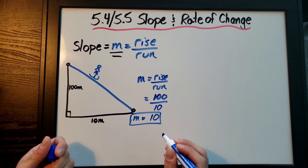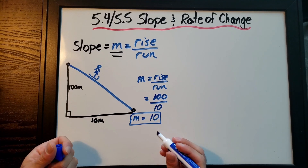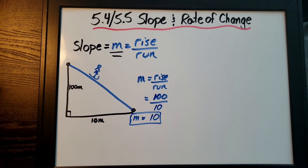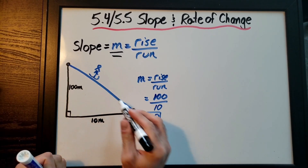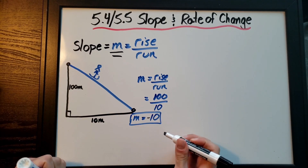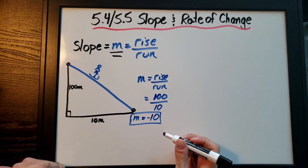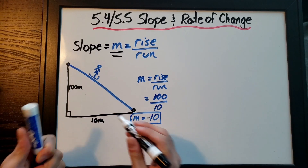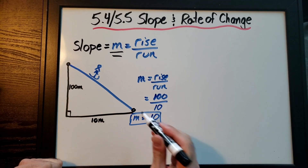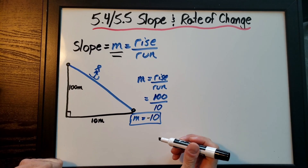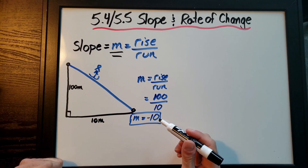In this example, 100 divided by 10 equals 10, so the slope is 10. You also need to recognize that if a line is going down to the right, that's a negative slope. You can recognize it visually — going down to the right means negative — rather than just relying on the numbers, but I'll show you both ways.